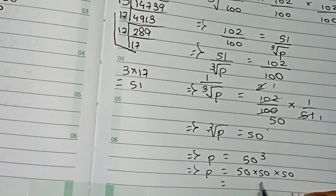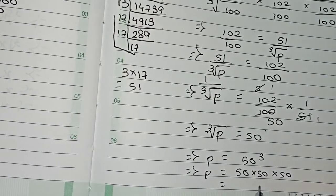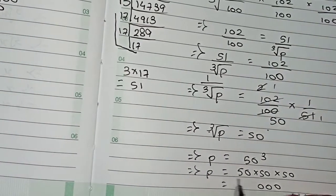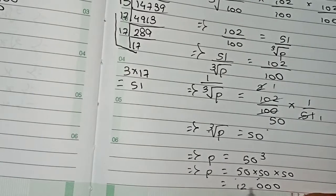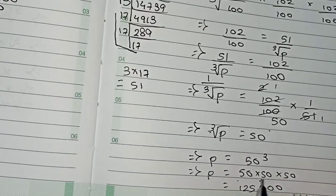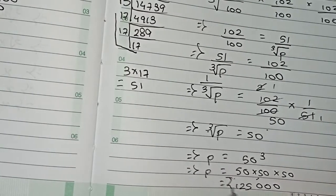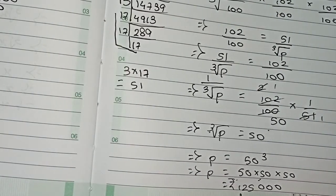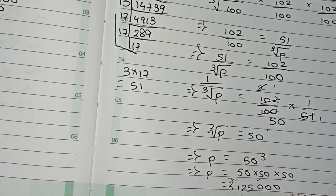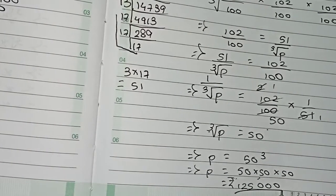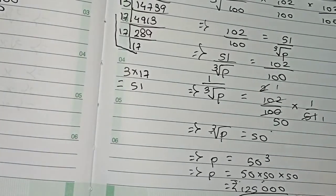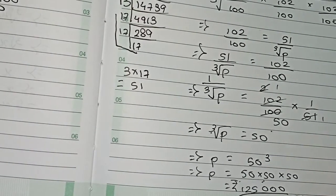Therefore P = 50 × 50 × 50 = 1,25,000. So the answer is rupees one lakh twenty-five thousand. That is our final answer for this question. Thanks for watching this video and please subscribe to my channel for more solutions.